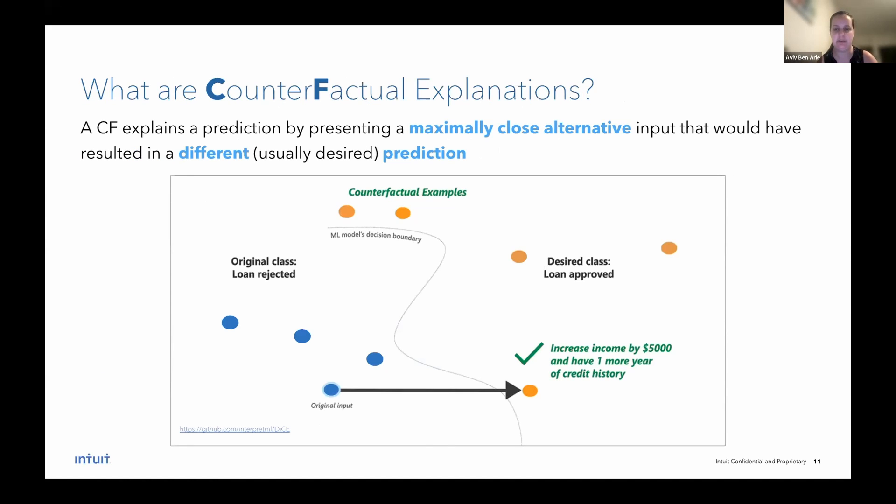So what are counterfactual explanations? Formally, a counterfactual explanation explains a prediction by presenting a maximally close alternative input that would have resulted in a different, usually desired prediction. Let's take a look at a graphic example from a package I'll mention later on in the talk called DICE by Microsoft. So in this example, we have a loan approval model. The dots in blue represent the original class, which is the people that got rejected for a loan by the model. The gray line here is the model's decision boundary. And the orange dots are the users that received the desired class, which is the loan approved by the model.